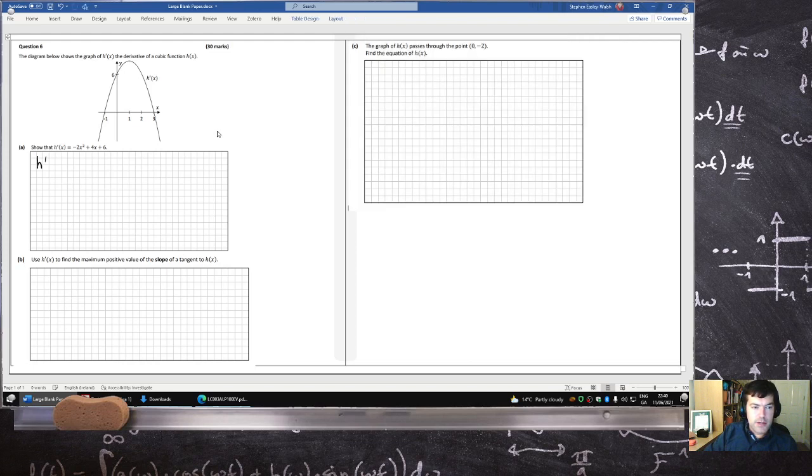So the equation of the quadratic is a times x plus 1, because that's the first factor, x minus 3. Now it should cross the y-axis at 6, so that means h derivative of 0, which will equal a times 1 times minus 3. And that's supposed to equal 6, which means a equals minus 2.